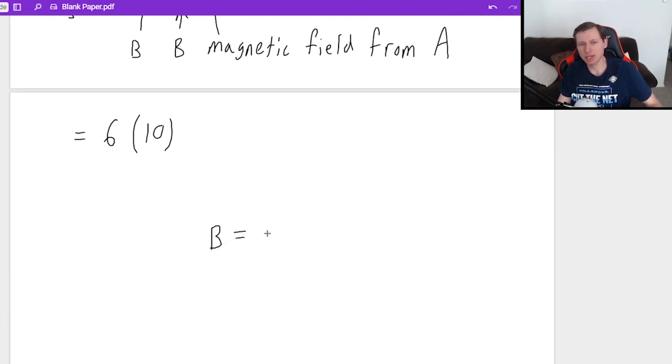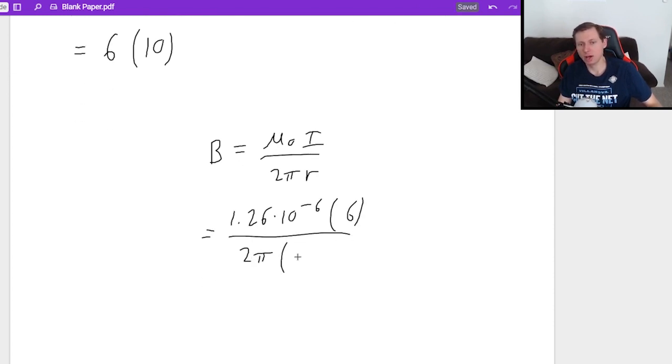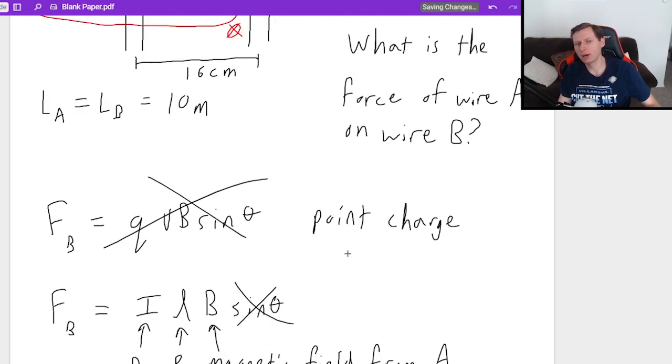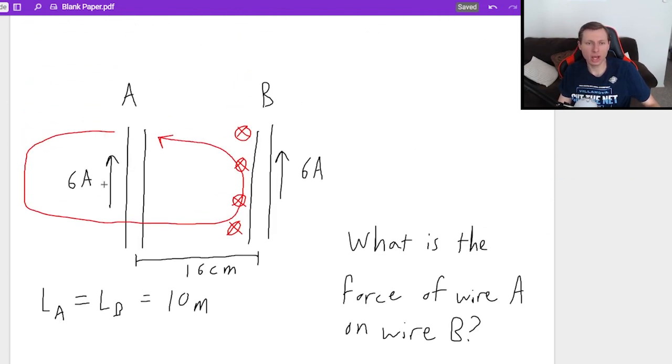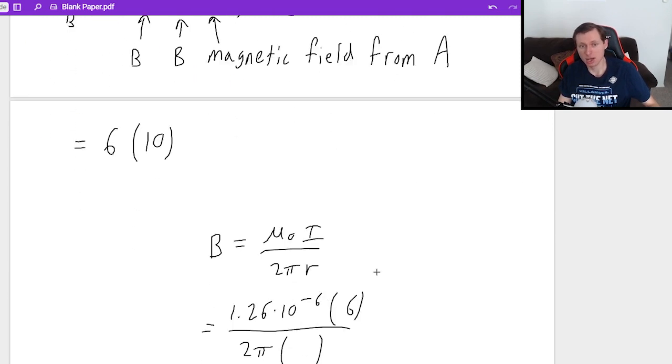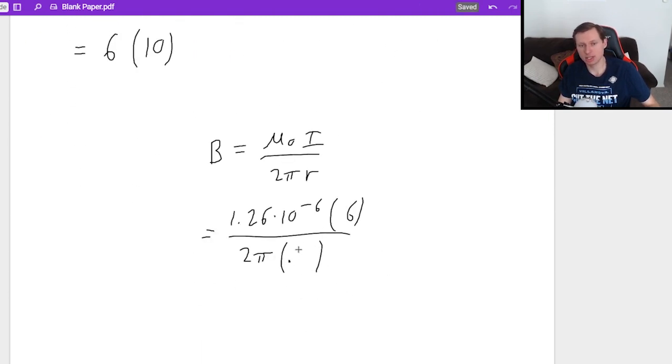Using the equation B equals mu naught I over 2 pi R, and this is specifically for wire A, but since all the values are identical, it won't end up mattering that much. So mu naught is a constant, 1.26 times 10 to the minus 6. This is the current in wire A, so we would say 6, and then divided by 2 pi. R is the radius, not like the length of the wire, but really the distance away from wire A. In other words, wire B is 16 centimeters away from wire A. I wouldn't write centimeters, I would write 0.16 meters.